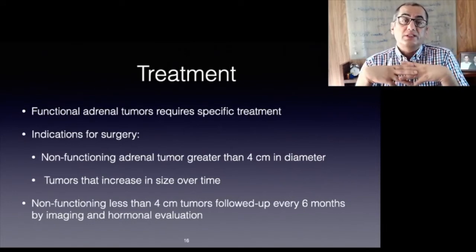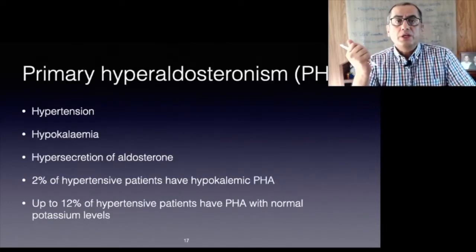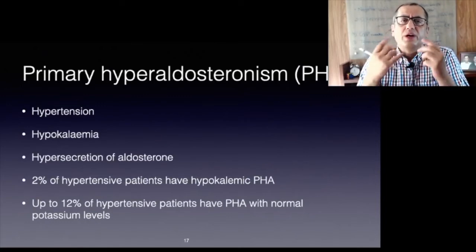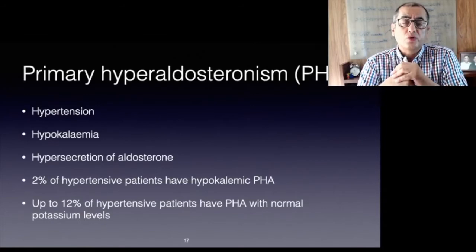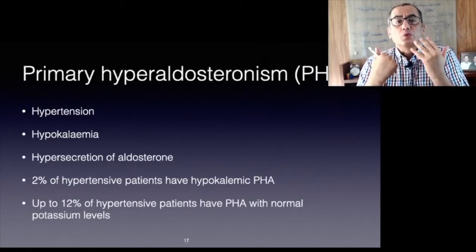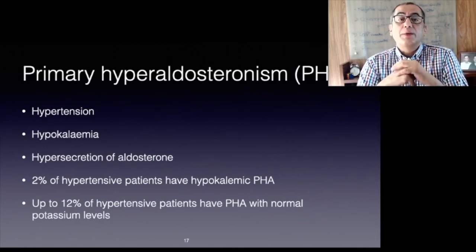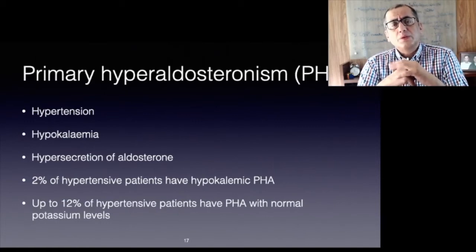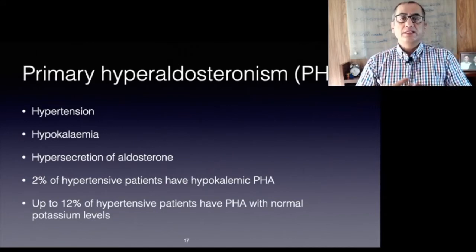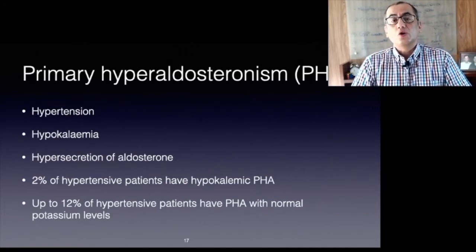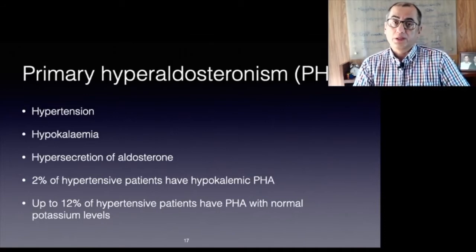Primary hyperaldosteronism (PHA) is defined by hypertension, hypokalemia, and hypersecretion of aldosterone. In PHA, plasma renin activity is suppressed. Among patients with hypertension, the incidence of hypokalemic PHA is approximately two percent. Recent studies reveal up to 12 percent of hypertension patients have PHA with normal potassium levels, as potassium levels are an inconsistent diagnostic feature that cannot be relied on to confirm or exclude the disease.